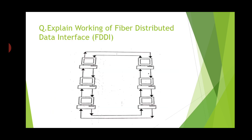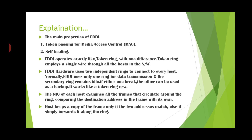Now we will see the FDDI, that is the working of a fiber distributed data interface. The main properties of FDDI are token passing for media access control and cell filling. FDDI operates exactly like token ring with one difference. Token ring employs a single wire through all the hosts in the network. FDDI hardware uses two independent rings to connect to every host. Normally, FDDI uses only one ring for transmission of data, and the secondary ring remains idle. If either one breaks, the other can be used as a backup. It works like a token ring network.